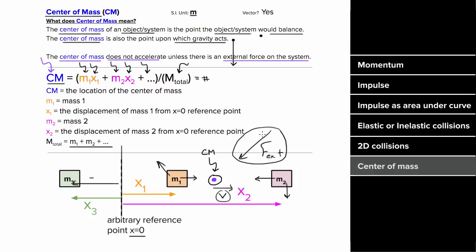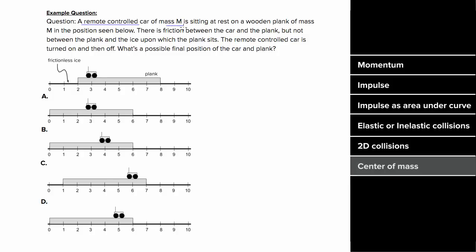Let's say a remote control car of mass M is sitting at rest on a wooden plank also of mass M. There is friction between the car's wheels and the plank, but no friction between the plank and the ice. The car is turned on and off — what would be a possible final position of the car and the plank? Since both the car and plank start at rest, the center of mass is at rest. The car's mass is at position 3 and the plank's center is at 5, so the center of mass is at location 4.